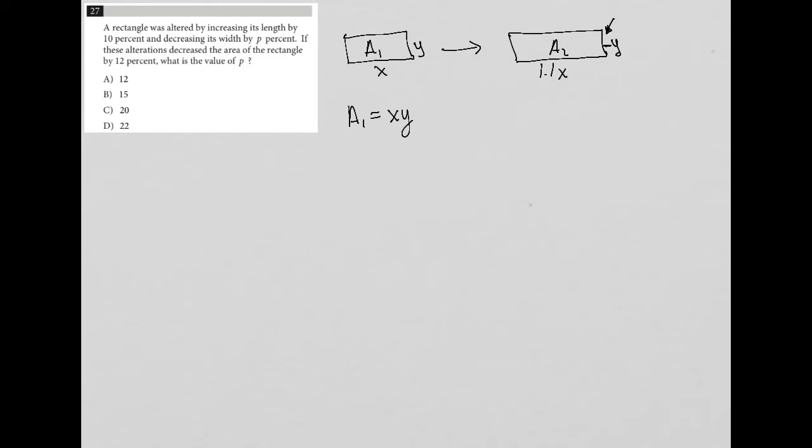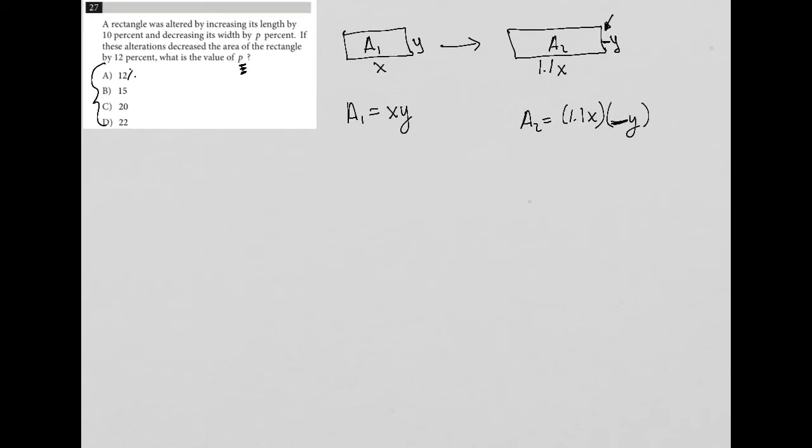How do I find the area for the second rectangle? For my A2 must be 1.1X, because that's the base, times the height of this blank Y. I don't know what that value is. And I'm okay with not knowing what that value is, because the question is asking what the value of P is. And all these numbers here represent the value of P. I know these are percentages, so this is really 12%, 15%, 20%, 22%. So I can probably figure this out.